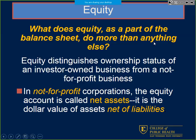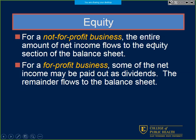In for-profit you'll see it called equity, but in non-for-profit we see it called net assets — as shown on this sheet at the bottom: 'net assets (equity).' You can take a quick glance and tell whether an organization is for-profit or non-for-profit based on how they label things. In non-for-profit, net income flows to the equity section of the balance sheet. In for-profit, net income is paid out in dividends first, then the remainder flows to the balance sheet.